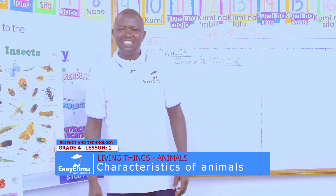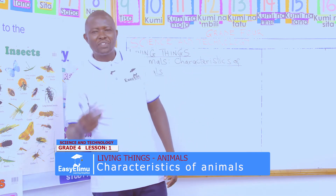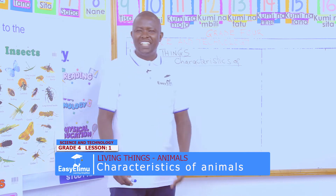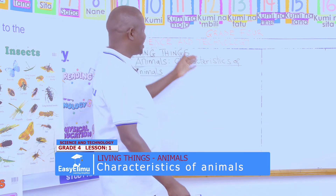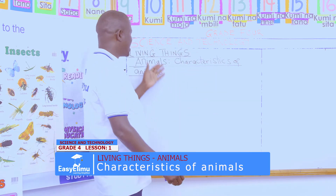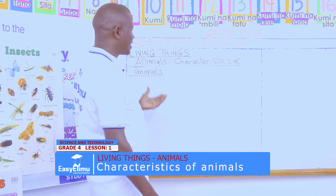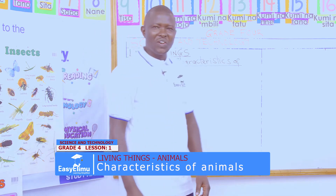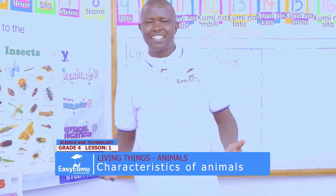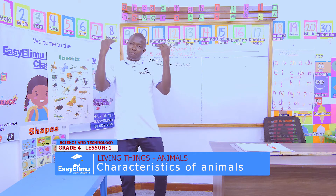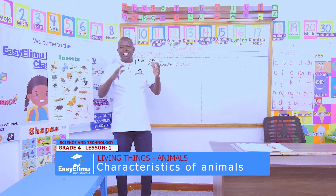Hello my learner, my name is Teacher Jonathan. Welcome to Easy Elimu Learning Simplified. In our today's lesson for Grade 4 Science and Technology on living things, we look at animals and their characteristics.